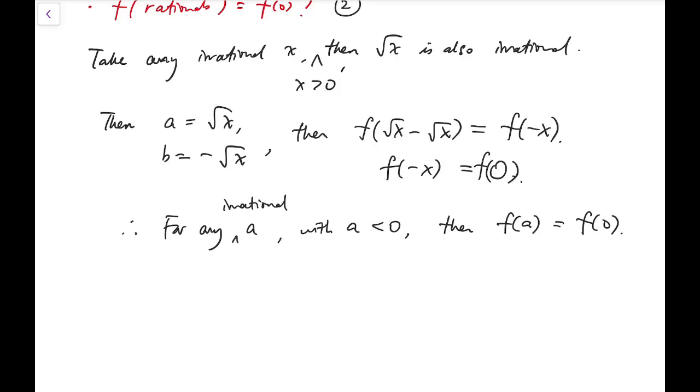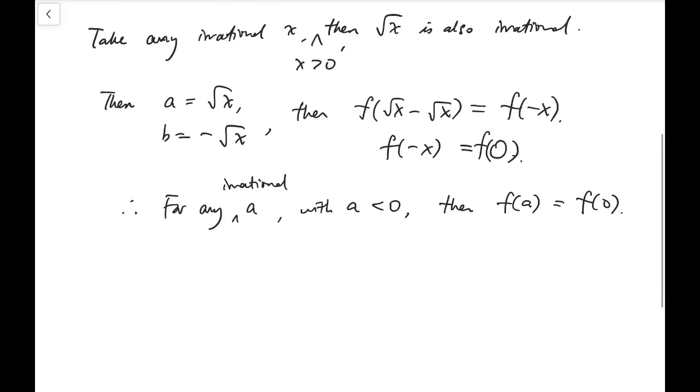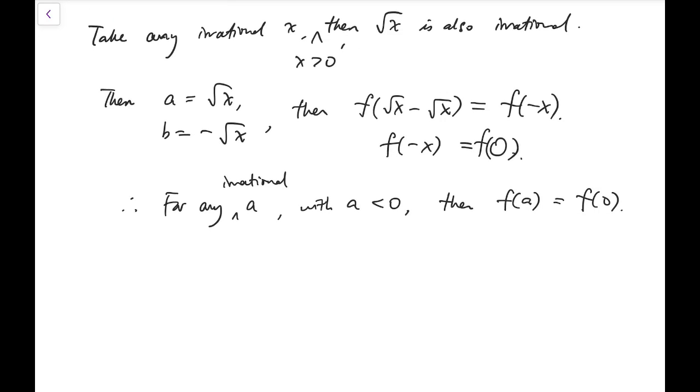All such irrational numbers, uncountably infinitely many of them, would all just go to one single value, f of 0. So that's good progress.